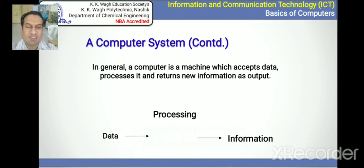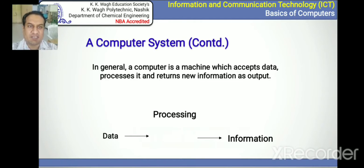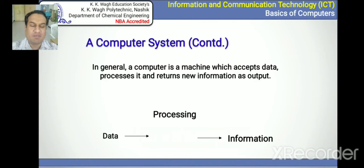The computer system basically has three elements: data, processing, and information — which is essentially input, process, and output, just like any manufacturing industry. Input is the data we type on a keyboard or provide through input devices; the CPU processes that data and gives us output, which may be in the form of images, videos, presentations, calculations, etc.